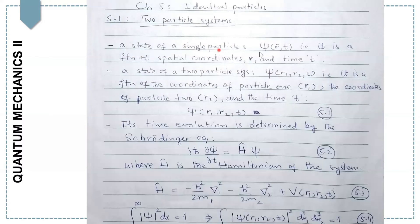As we know, a state of a single particle can be represented by ψ as a function of r and t, where r represents the spatial coordinates and t represents time. Now, to update the system to consist of two particles, we simply introduce another spatial coordinate r₂. So the state becomes ψ as a function of r₁ and r₂, where r₁ represents the position of particle 1 and r₂ represents the position of particle 2, and time is simply t. So ψ(r₁, r₂, t) represents the state of a two-particle system.